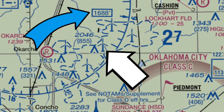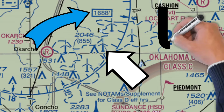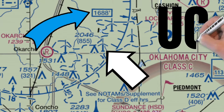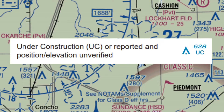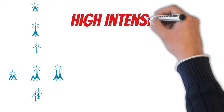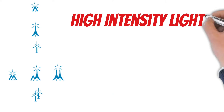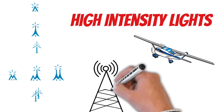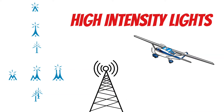Just be careful though — if you ever see the letters UC beside this number, that means this elevation is unverified. You could potentially see these letters beside any tower, meaning it's either under construction or the elevation at the top is unverified. For any one of these symbols, you could also see little lightning bolts on top of them, which tells us that these obstacles have high intensity lights on top, making them just a little bit easier to spot.